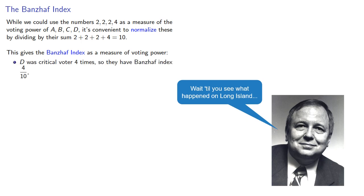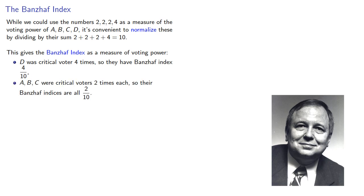D was critical voter four times, so they have Banzhaf index four tenths. A, B, and C were critical voters two times, so their Banzhaf indices are all two tenths.